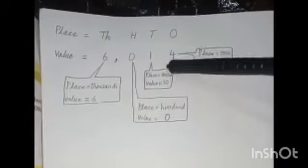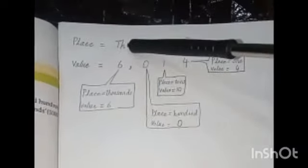In a number, its place and place value will be different. For example, we are having the number 6014. Here, 6 is the value and thousands is the place. So thousands is the place and 6 will be the value. Now, is there any hundred? No, there is no hundred, so we will consider it zero.